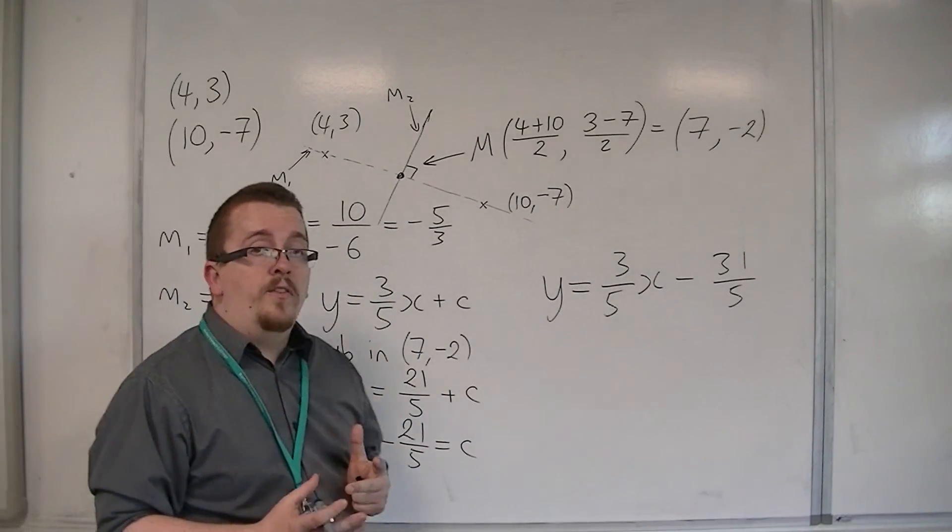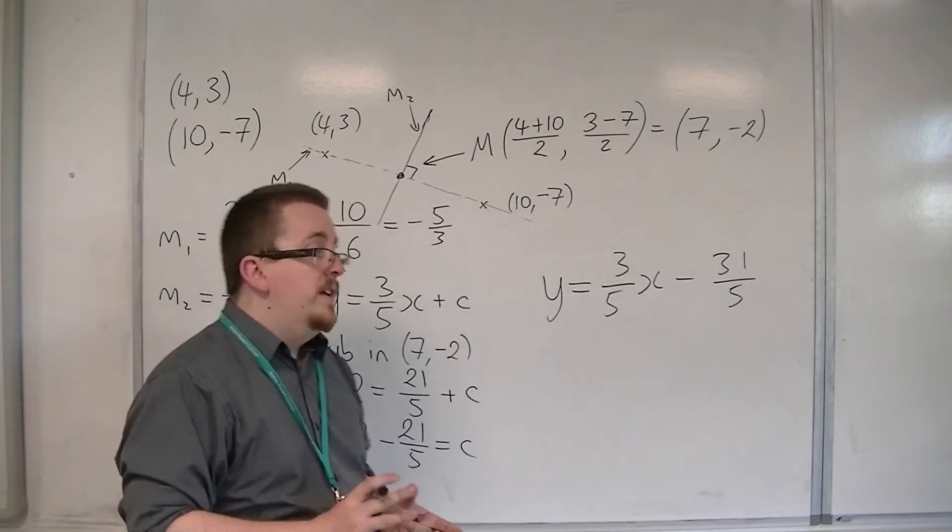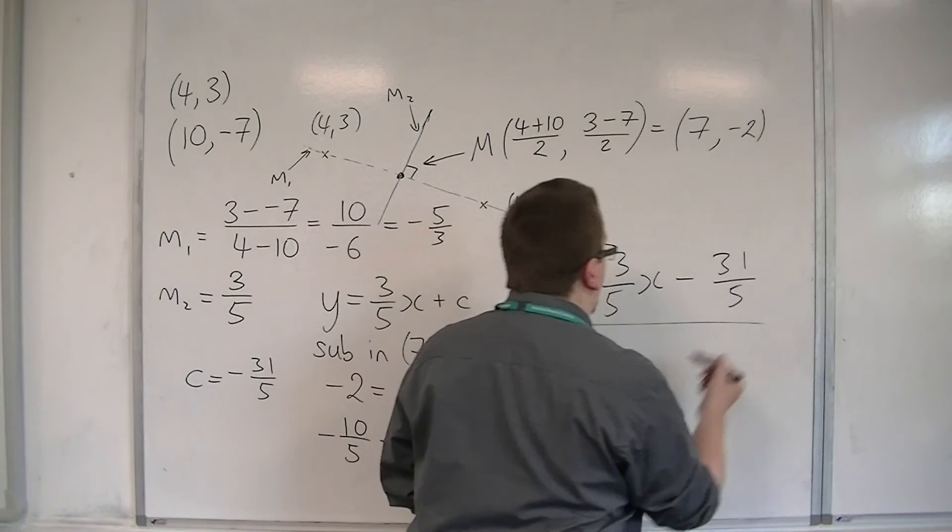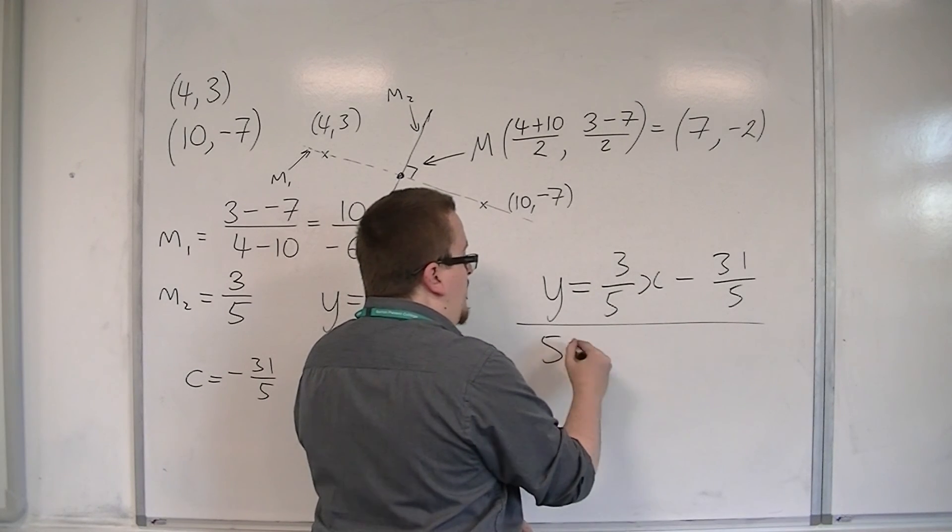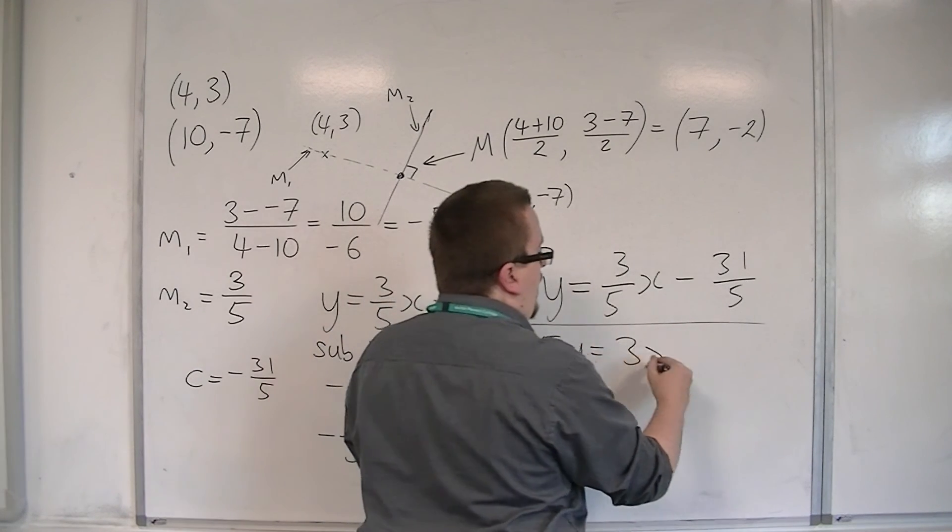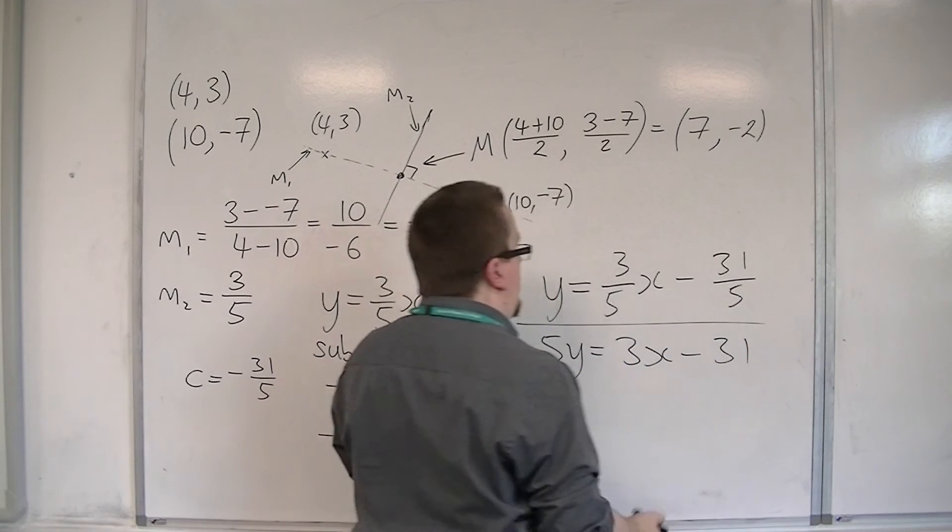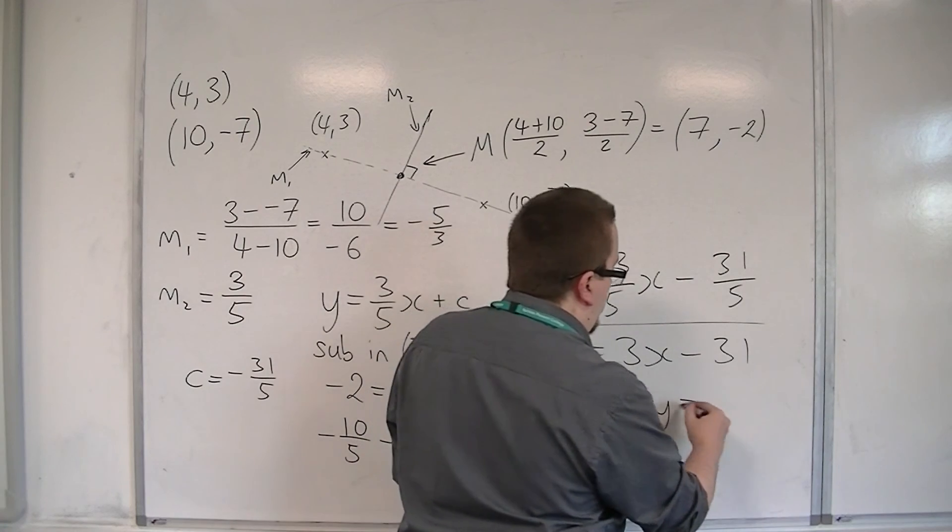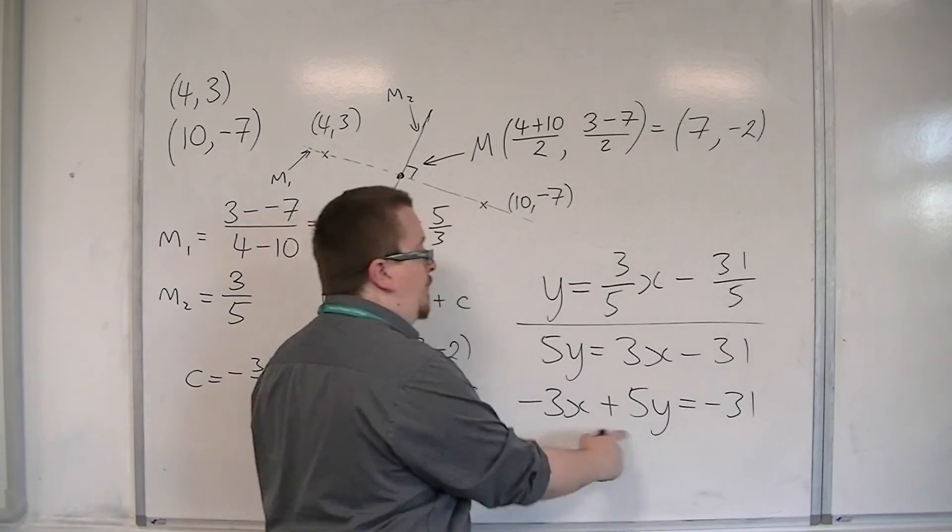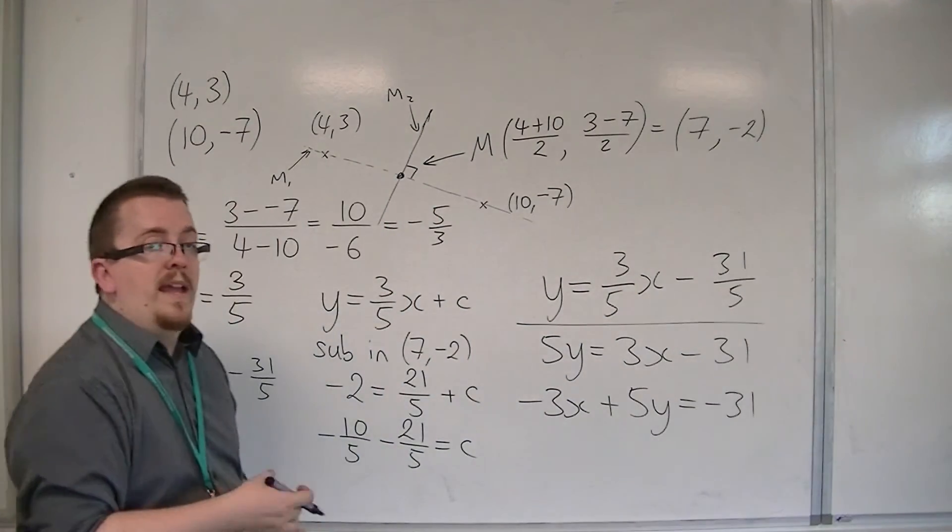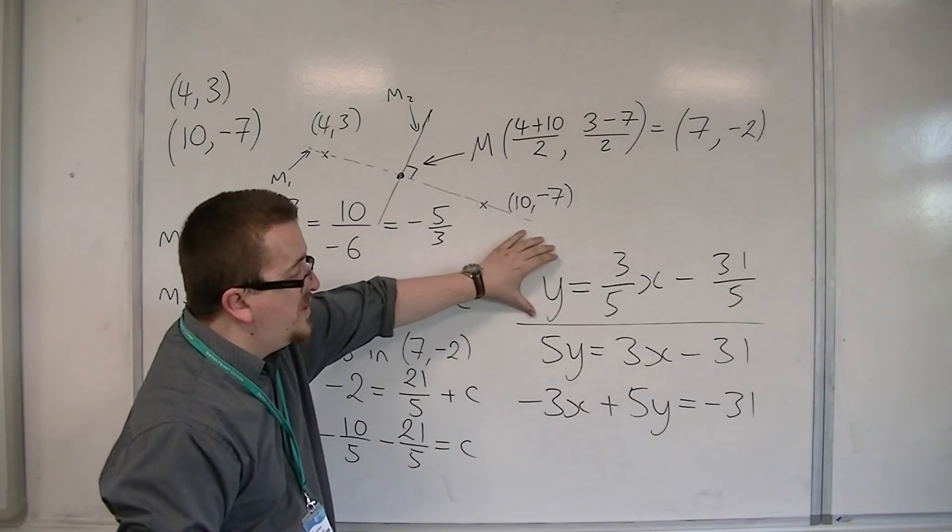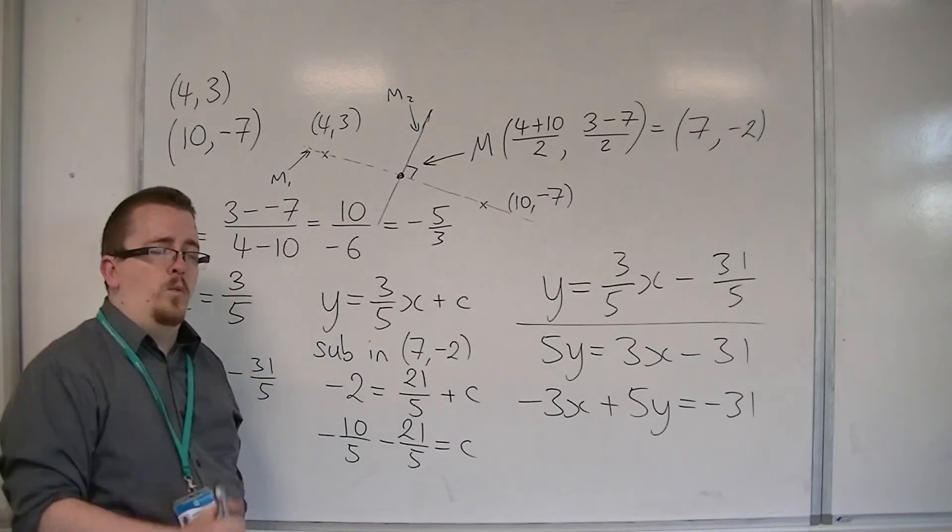Now, you can, as we did in the previous video, manipulate that. You can multiply through by 5 if you like. It really depends what the question is asking you to do. And then you could rearrange it to get it into the format we had before, of ax plus by equals c, where a, b and c are integers. But, for the moment, just getting to that stage is really what you want to be able to do.